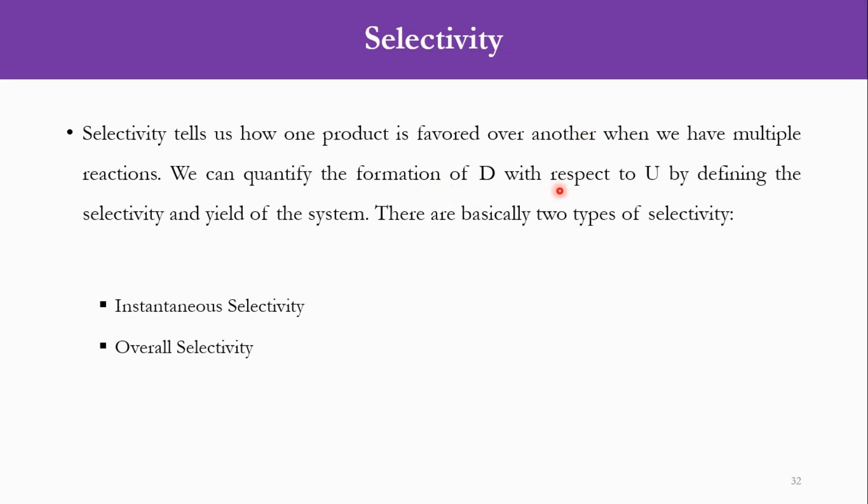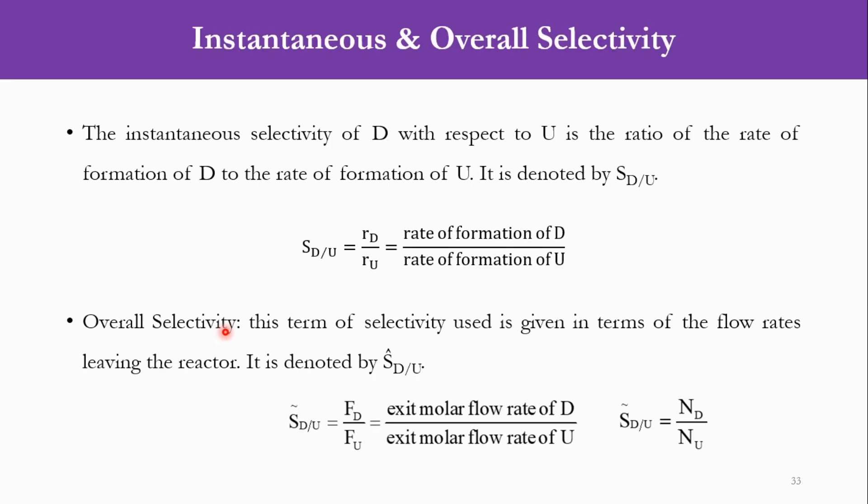We can quantify the formation of D with respect to U by defining the Selectivity and yield of the system. In Selectivity, we have two parameters: instantaneous selectivity and overall selectivity. The instantaneous selectivity is defined as the ratio of rate of formation of D and rate of formation of U, so rD over rU. While the overall selectivity is the same, but instead of rate, we are talking about the exit molar flow rate of D to the exit molar flow rate of U. Or if we talk about batch systems, then we use the number of moles. So these are the two definitions of instantaneous and overall selectivity which take into account the formation of one product to the formation of another product.